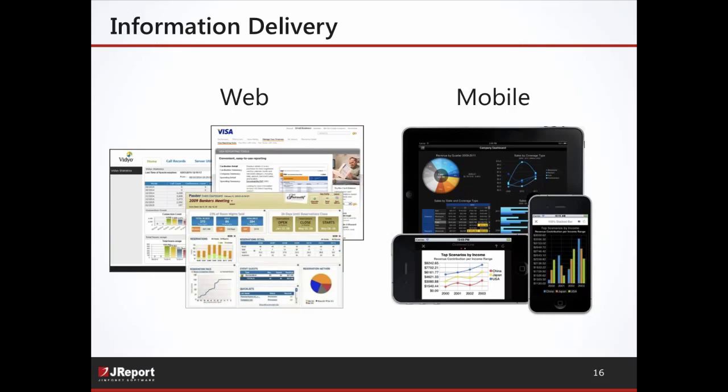We support HTML5 on the front end and can output to PDF, Excel, FTP servers, and email servers. With Excel, we don't just take a snapshot — we export into real Excel chart objects so you can continue analysis directly in Excel. We also have JReport Mobile, available free from the Apple App Store — a native iOS app to analyze data on the go. Any dashboard created with J-Dashboard can be viewed and interacted with on a mobile device.